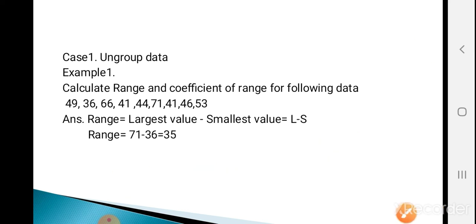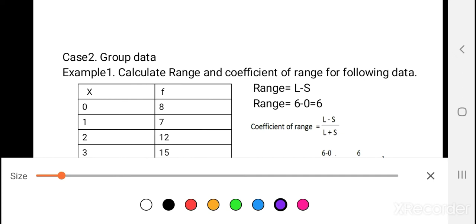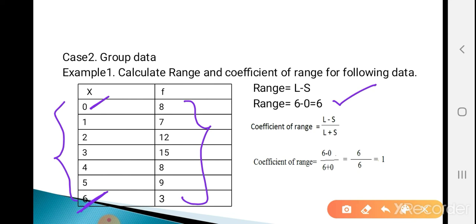Now for grouped data: we are given the values of X along with their frequencies. The formula for range remains L − S. The largest observation is 6 and the smallest observation is 0, so range = 6 − 0 = 6. Coefficient of range = (6 − 0) / (6 + 0) = 6 / 6 = 1.